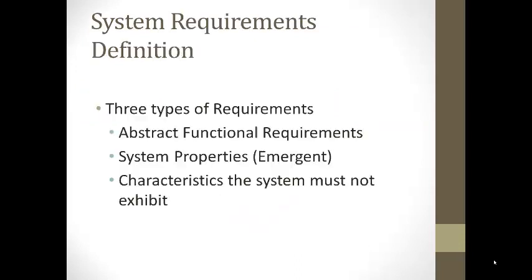Phase one is the Requirements Definition. There are three types of requirements for Systems Engineering. One are the Abstract Functional Requirements — for the overall system you want the requirements to be abstract rather than detailed; details will be given at the subsystem level. You also need to specify the system properties, particularly the emergent ones, talking about performance and volume. And then characteristics the system must not exhibit — an example would be presenting the user with too much information in an air traffic control system.